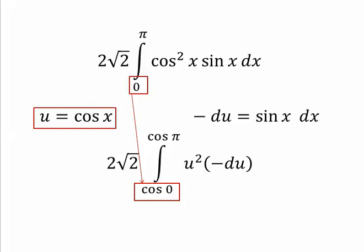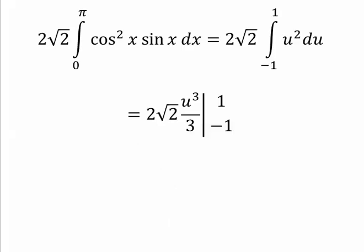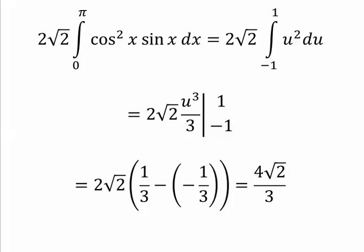Okay, so u equals cosine x. And so du would be negative sine x dx. Then I brought the negative out to the front. That's how I got negative du equals sine x dx. Then I changed my bounds. And I'm ready to integrate. Cosine of pi is negative one. Cosine of zero is one. Let's do that switch again. And I'm ready to evaluate now. And I get 4 radical 2 over 3.